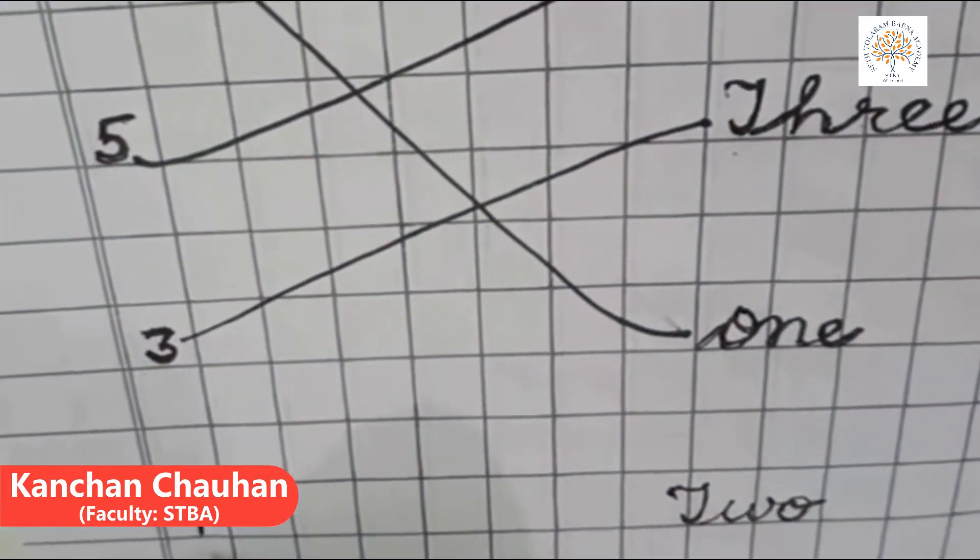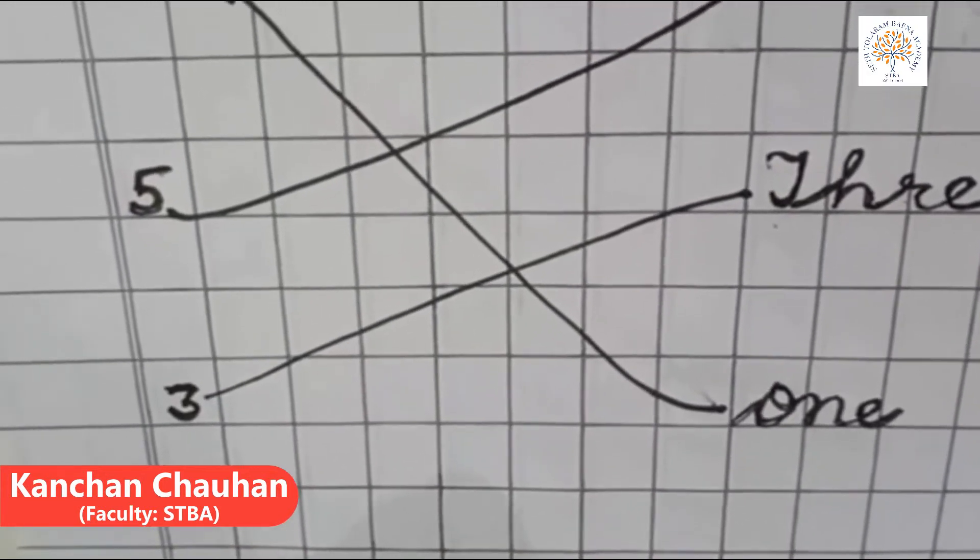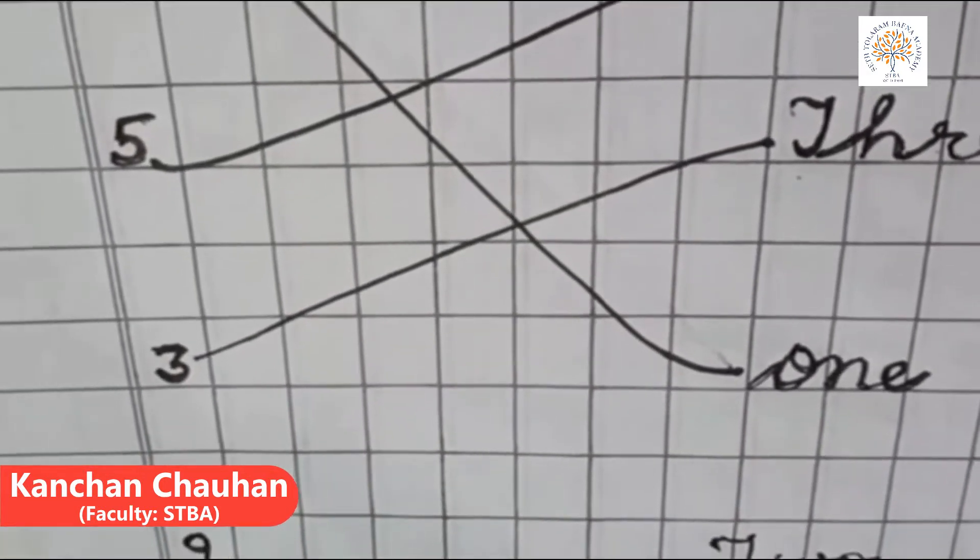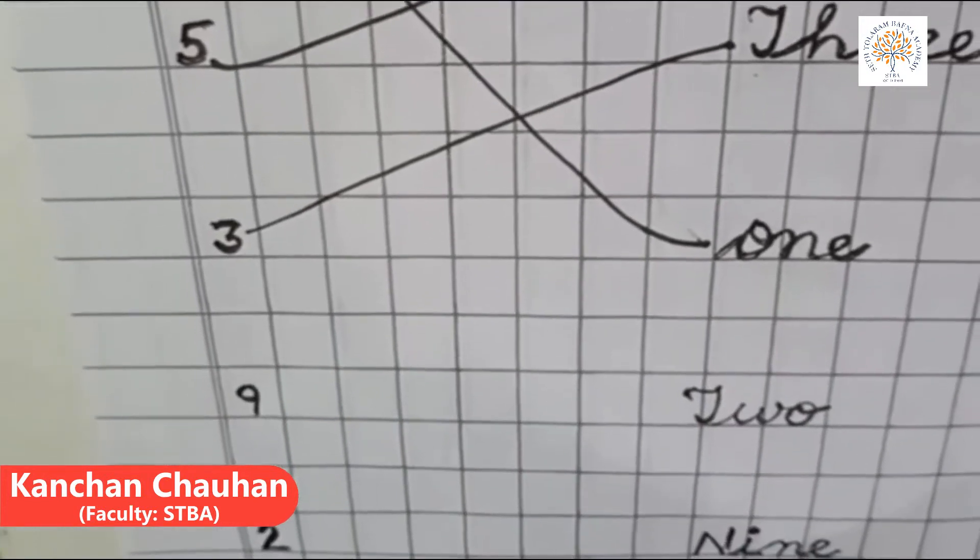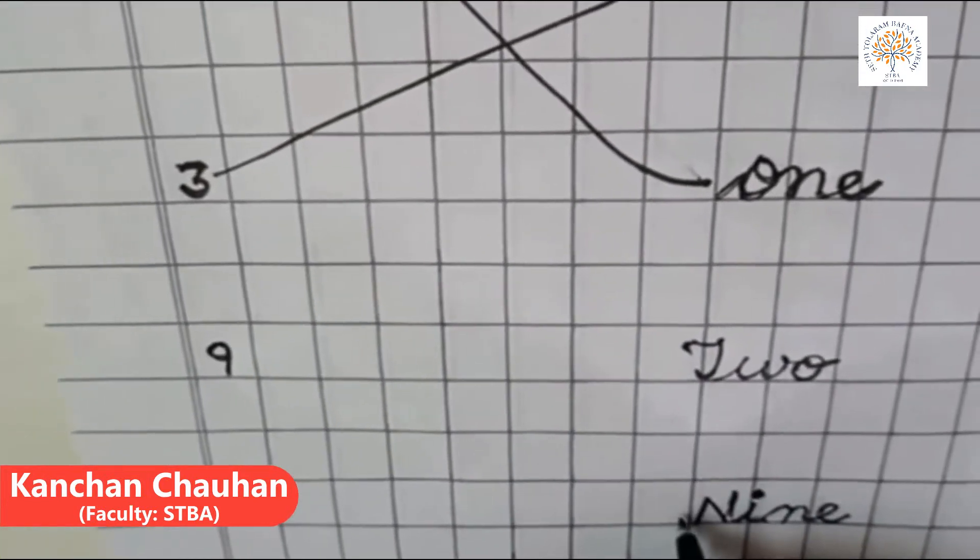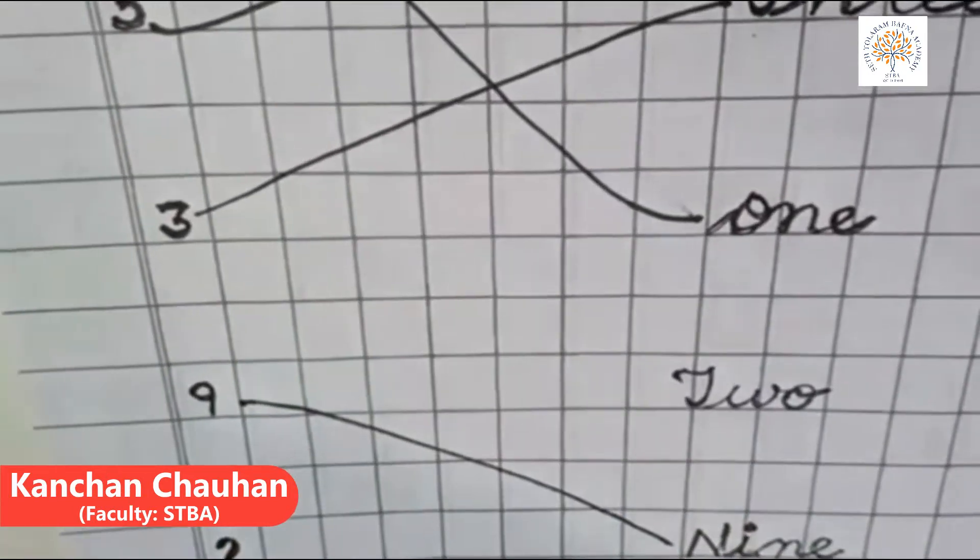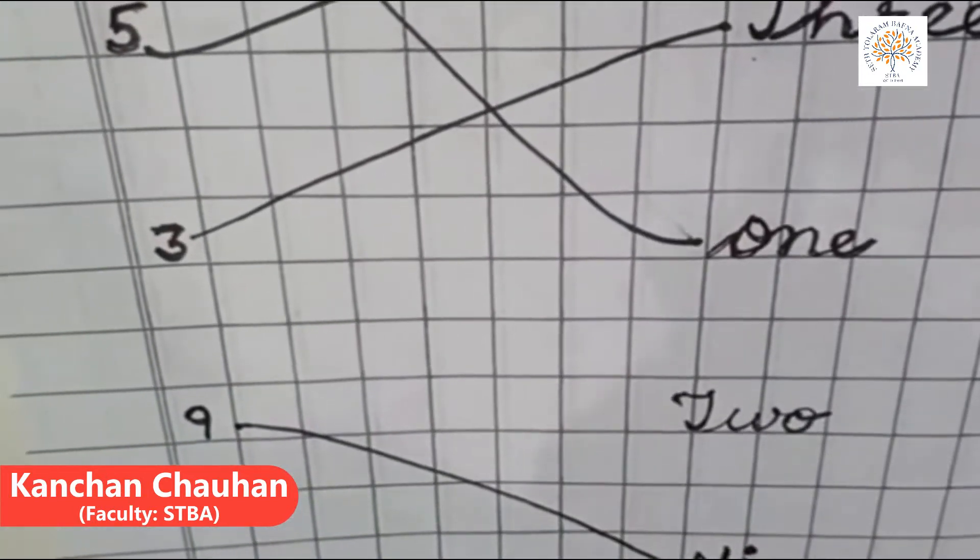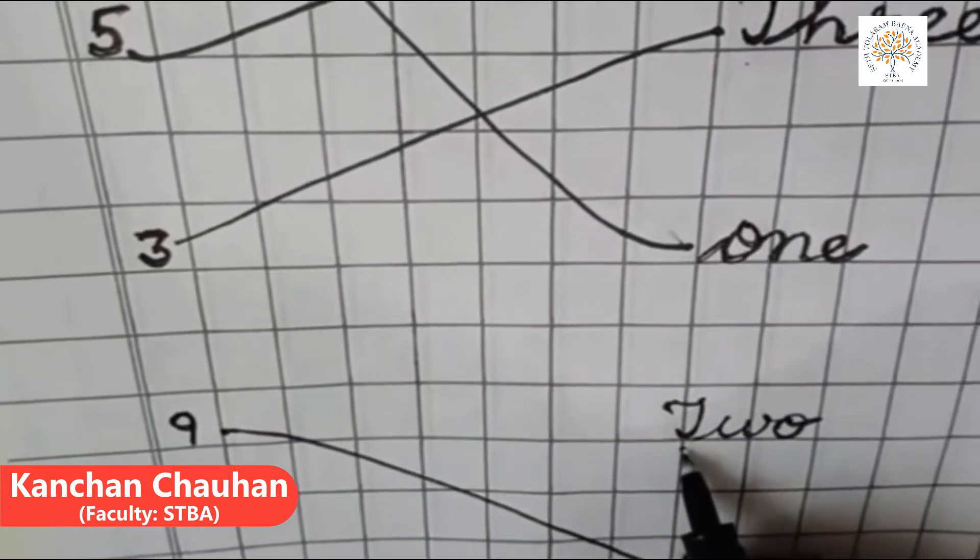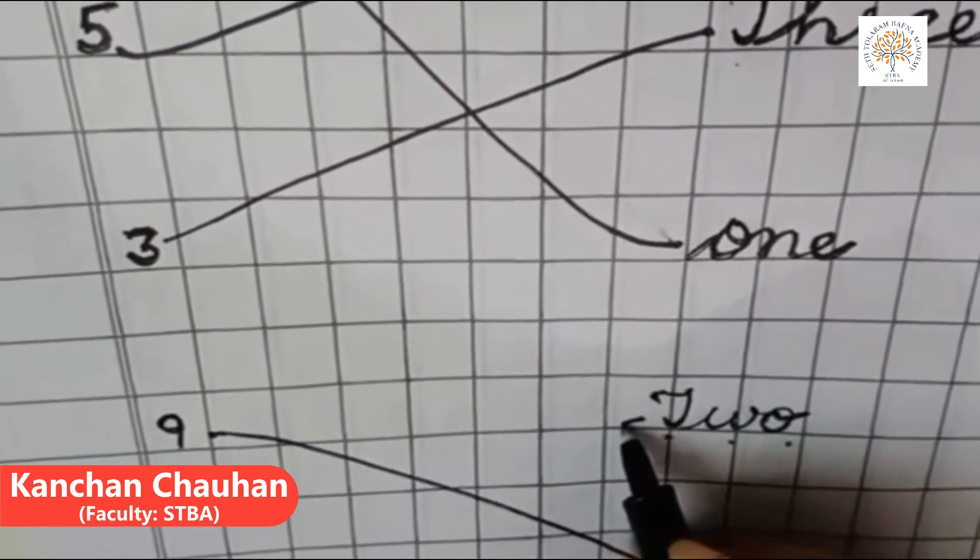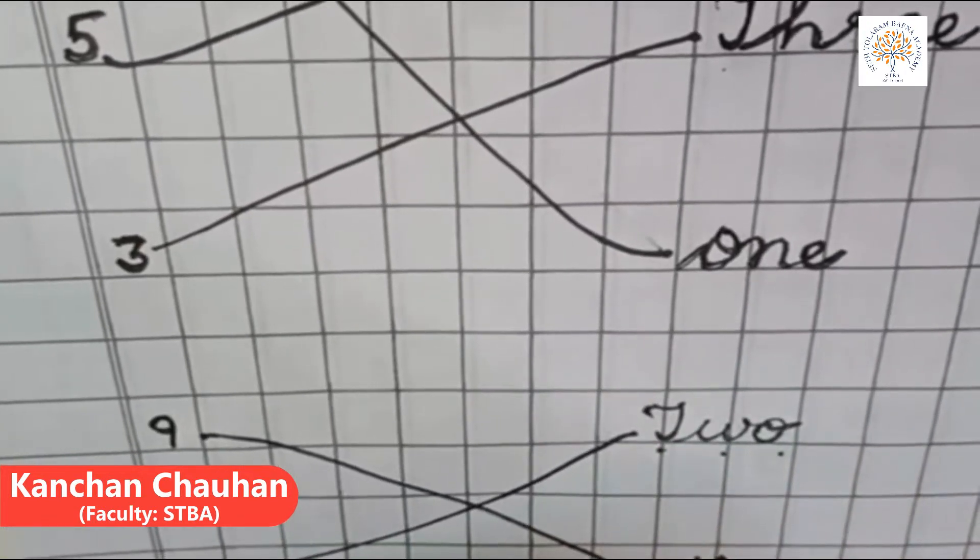This is numeral 9 and for it, number name is N-I-N-E-9. N-I-N-E-9 is here. So, match it. Now, only 2 is left and 2 is here. T-W-O-2. So, match it with numeral 2.